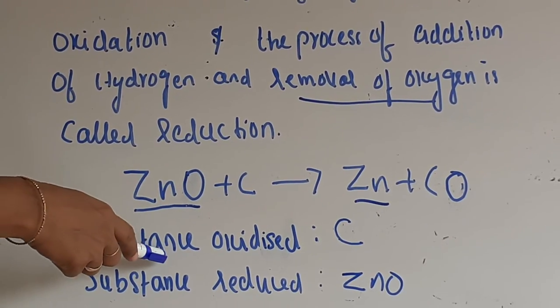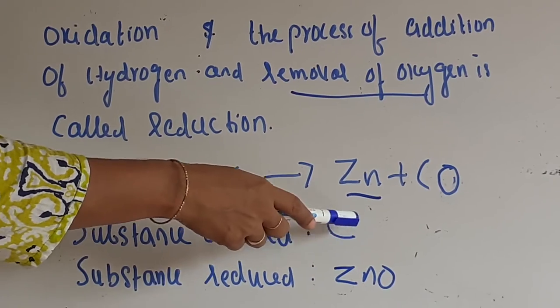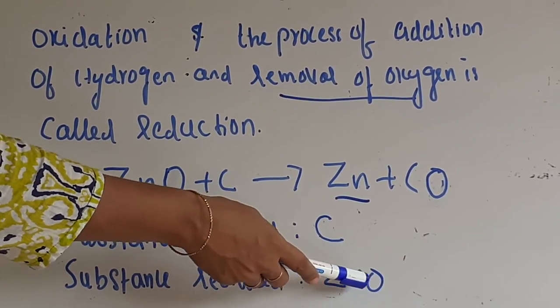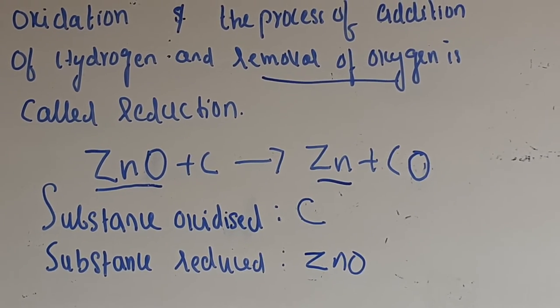So usually it comes like this. The substance oxidized will be carbon and that will be the reducing agent, and substance reduced zinc oxide will usually be the oxidizing agent in simple equations.